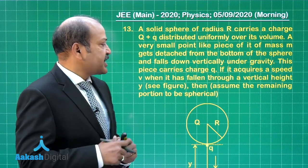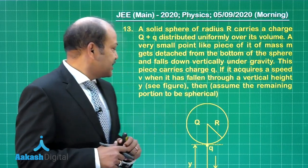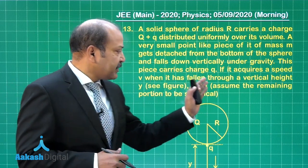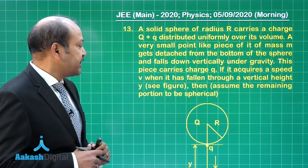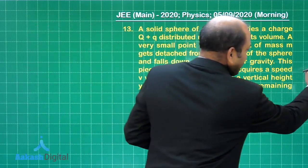This piece carries charge q. If it acquires a speed v when it has fallen through a vertical height y, see figure, then assume the remaining portion to be spherical and let us look at the diagram.